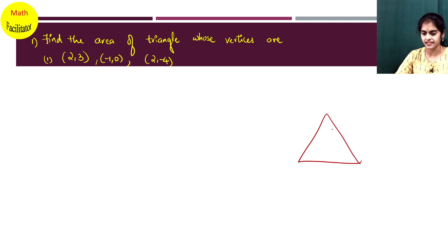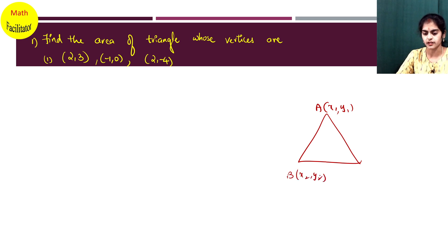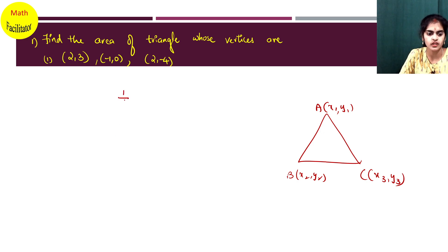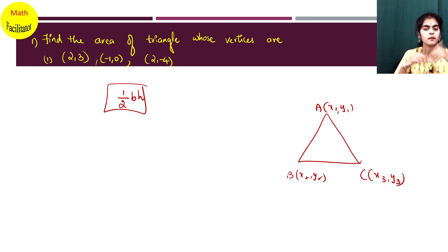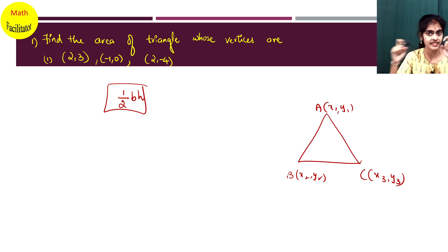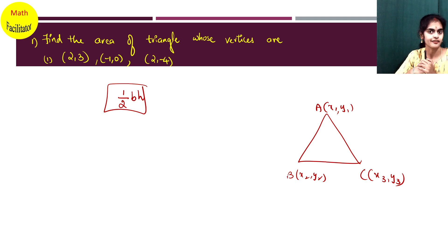If this is a triangle and the coordinates are given to you — x1, y1; x2, y2; x3, y3 — we know the area of any triangle can be found with the formula: half base into height. This is what we learned in earlier classes. But when the base and height are not given to you and instead the three coordinates — the vertices of the triangle — are given, then how can we find the area? That is the concept.